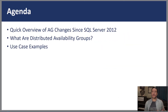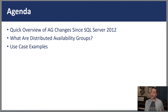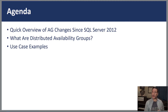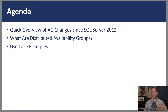Just a quick agenda of how the next little while is going to go. First, I'm going to introduce all the changes in a very compact way of how AGs have evolved in basically the past 10 years. After that, you'll have a basic understanding of where we are and where we've come from. Then: what are distributed availability groups and why do you need to care about them? And finally, I'm going to go through some use cases and show you a demo.